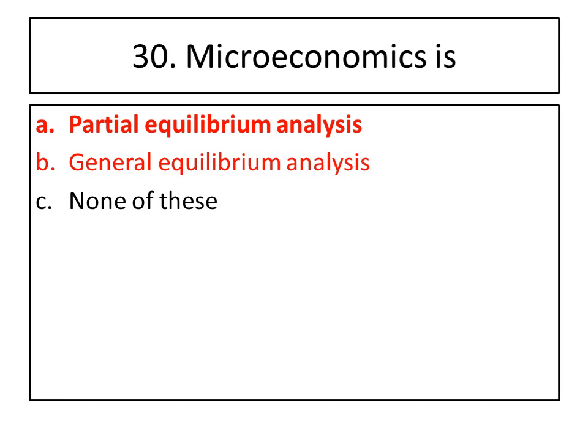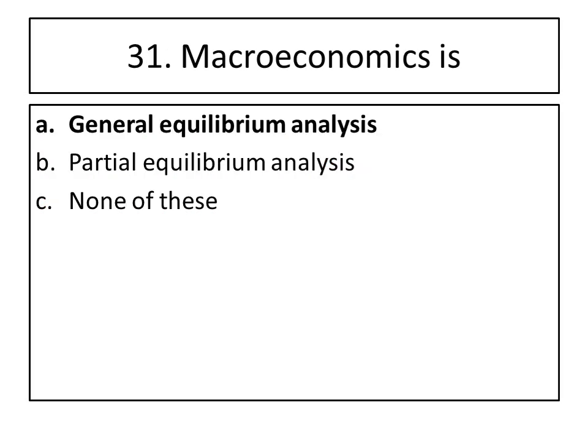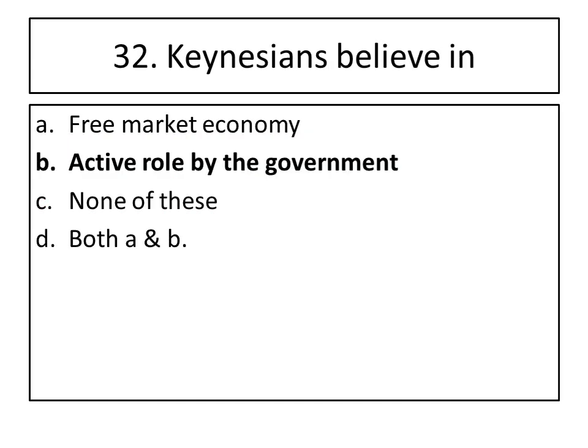Only A is the right answer; B is not the right answer — it is highlighted in red color as a mistake. Thirty-first question: macroeconomics is the study of aggregates and large groups, so it is a general equilibrium analysis, not a partial one. Options B and C are not right — only option A is correct.